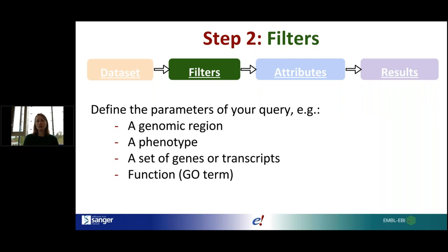Filters are the parameters of your query — you apply them to your dataset so you're not searching the entire Ensembl database. For example, instead of searching genes on every chromosome, you might filter to genes associated with a specific genomic region, or only a portion of a chromosome. You might also filter by phenotype, by a list of genes or transcripts, or by a particular gene ontology term.